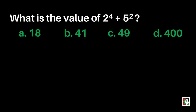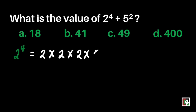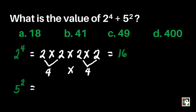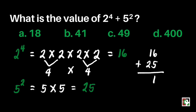Now let's go back to our problem. What is the value of 2 to the 4th power plus 5 squared? First, we get the value of 2 to the 4th power: that's 2 times 2 times 2 times 2. 2 times 2 is 4, and 4 times 4 is 16. Next, 5 squared is 5 times 5, which equals 25. All we need to do is add: 16 plus 25 gives us 41.